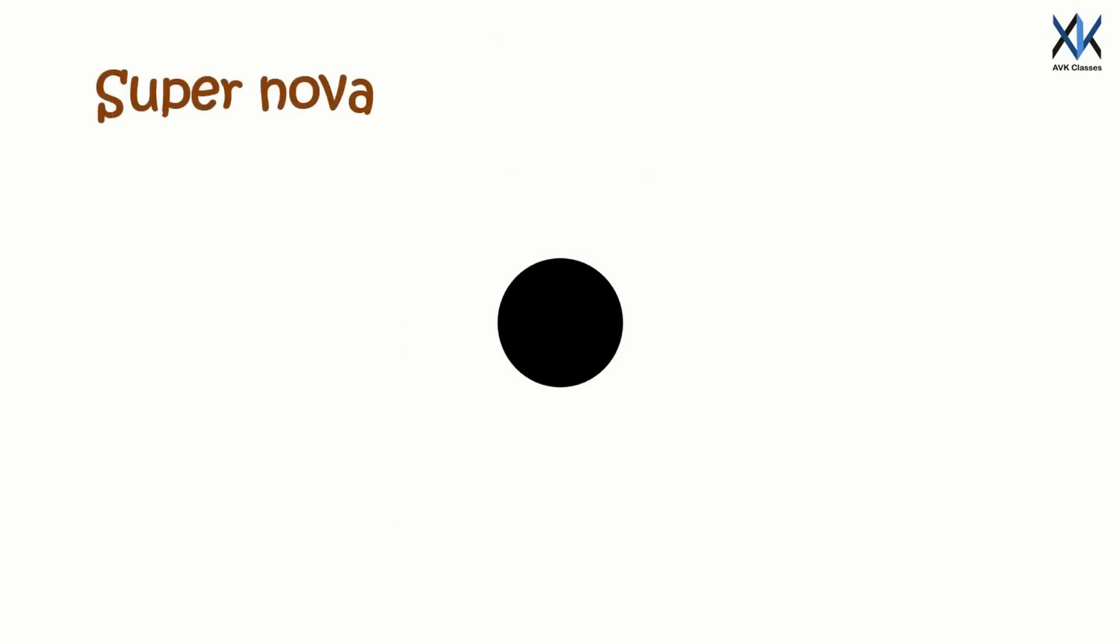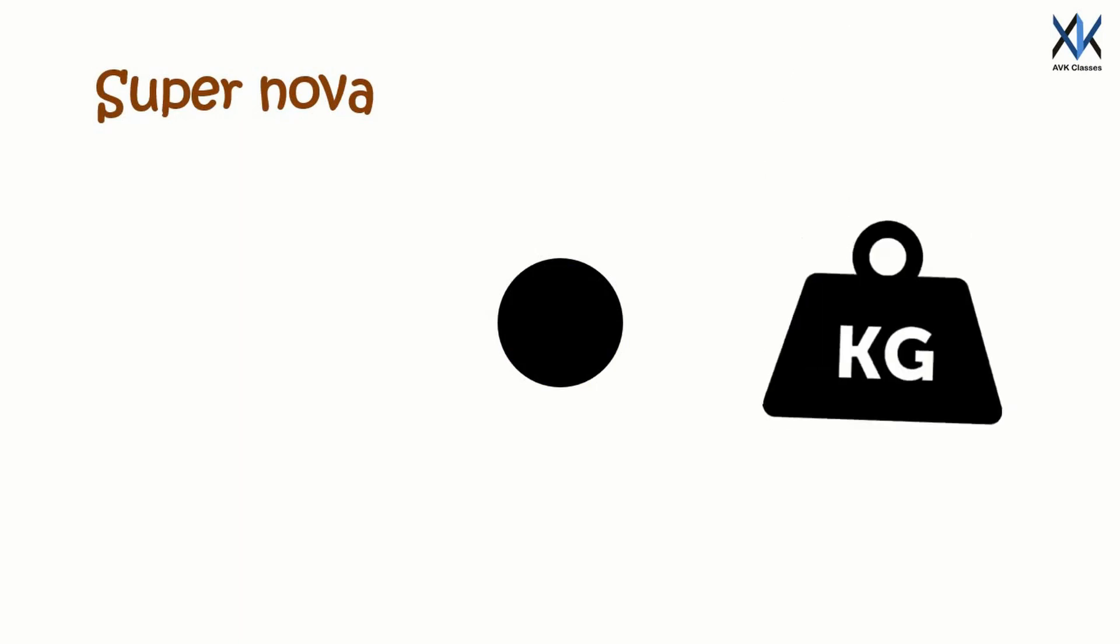But if you don't have supernova strength compression, you can instead make a black hole by adding more mass to your object.